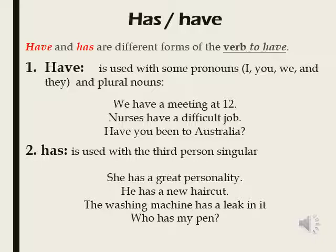Have and has are two different forms of the verb to have. اسم الأفعال اللي تابع لها have و has اسمها verb to have. These verbs include have, has, and in the past had. ثلاث أفعال موجودة وكلها اسمها verb to have، اللي هي have، has، وبالماضي had.